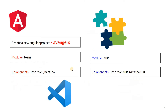In this video we are going to create a project called Avengers. We'll create a module called 'team', and inside this module we'll have two components: one is Iron Man and the second is Natasha — characters from the movie. If time permits, I'll create another module called 'suit' with two components: Iron Man suit and Natasha suit.